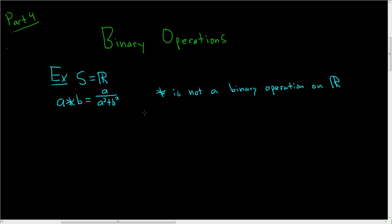Why? If you take zero — that's a real number — and you star it with itself, you get zero over zero squared plus zero squared. So you get zero over zero, which is undefined.